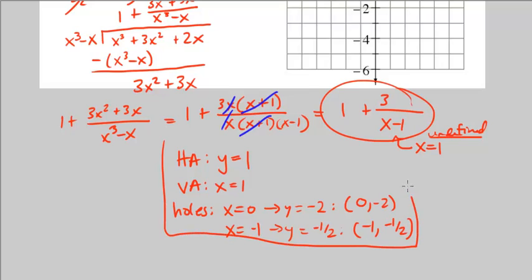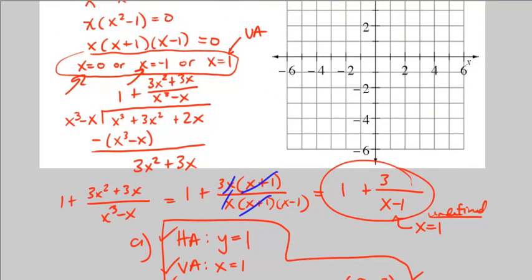So these are what we're looking for in part A. Horizontal asymptote, not a slant asymptote. Vertical asymptote, and it has two holes.